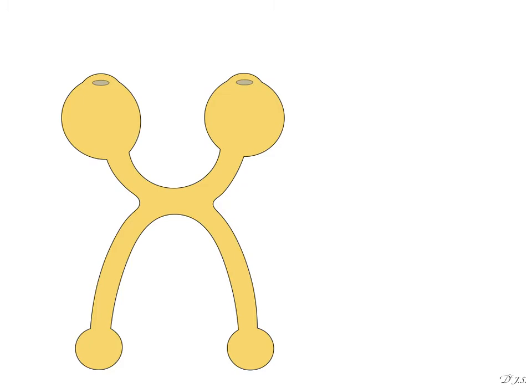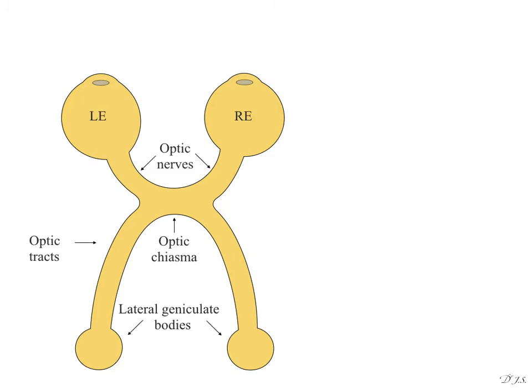Both optic nerves receive signals from both eyes, crisscrossing to form the optic chiasm, and the optic tracts terminate at the lateral geniculate body. This shows the nasal and temporal hemiretina of the left eye and right eye.